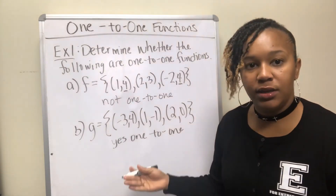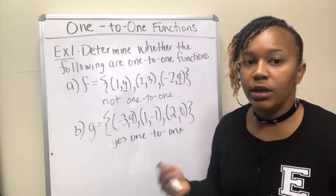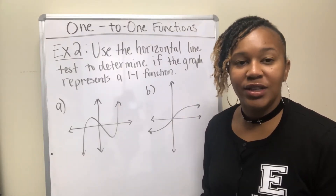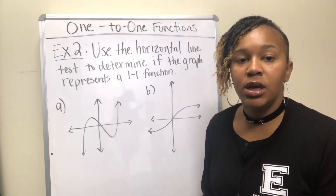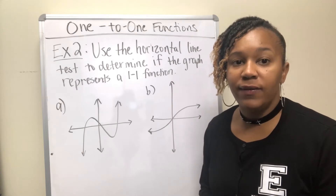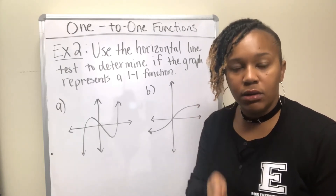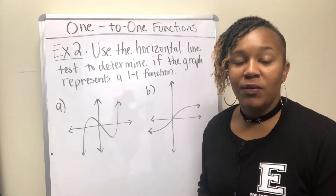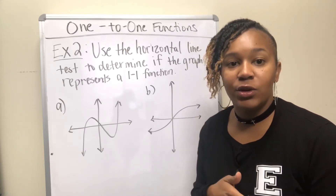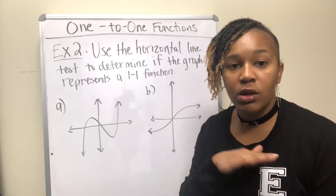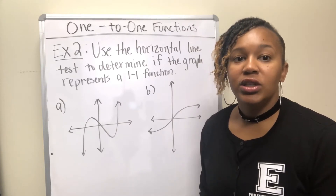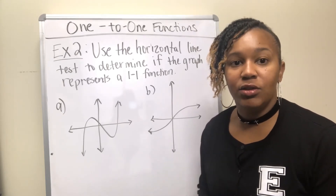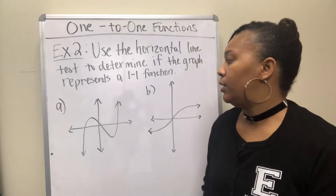To check if a set of ordered pairs is one-to-one, look for repeating X's and repeating Y's. For example two, we look at graphs to determine if they're one-to-one. To determine if a graph is a function, we use the vertical line test — each vertical line should pass through the graph at only one point. Then, to check for one-to-one, we use the horizontal line test to make sure each Y has only one X.